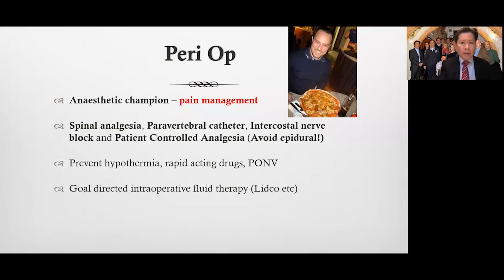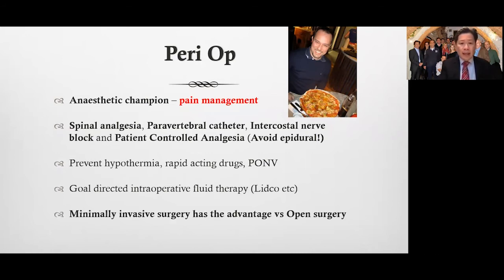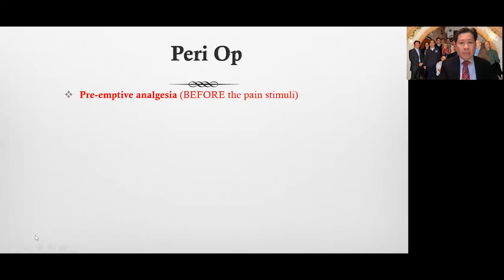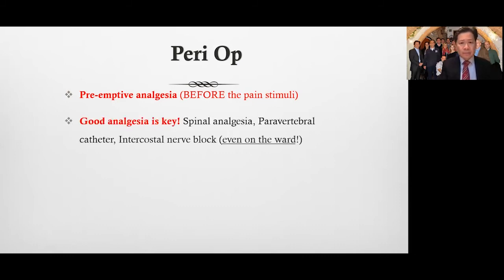Minimally invasive surgery has an advantage over open surgery when it comes to enhanced recovery. This paravertebral catheter is inserted because we avoid the associated complications from epidural. Perioperatively, before the incision, we do pre-emptive analgesia — basically, before the pain is inflicted, we give the analgesia. Good analgesia is key: spinal analgesia, paravertebral catheter, and intercostal nerve block. Even on the ward, you can put an intercostal nerve block in on two levels — this is not a difficult thing to do, and it improves their pain.